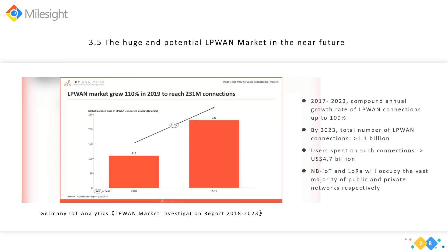The LPWAN market saw very strong growth during 2019 and 2020. The installed base reached 231 million LPWAN-connected devices by the end of 2019, and this figure increased further in 2020. This number represents a more than 100% increase compared to 2018. The analysis shows that the maturity of LPWAN technology is increasing, with a very wide portfolio of commercially available solutions.